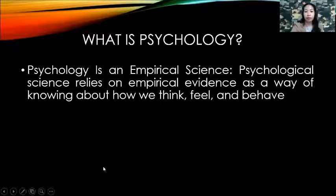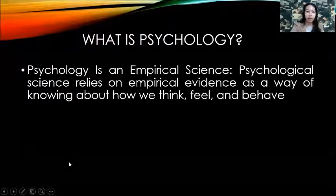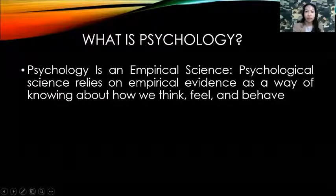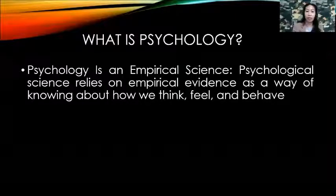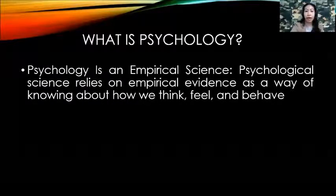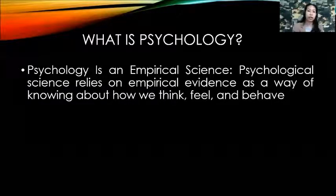Psychology is an empirical science. That is why psychology is also a part of science — it relies on empirical evidence as a way of knowing about how we think, how we feel, and how we behave. This involves research, processes, and procedure. That's why it's called empirical science.